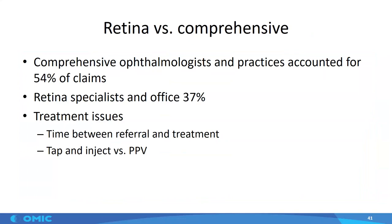Looking at the difference between retina specialists and comprehensive ophthalmologists: comprehensive ophthalmologists accounted for 54% of claims and retina specialists for 37%. Treatment issues that came up included the time between referral and treatment — sometimes there was a delay because the comprehensive ophthalmologist's office did not handle the referral properly, and sometimes there was a delay on behalf of the retinal physician who didn't decide to do a vitrectomy when experts felt it was needed.